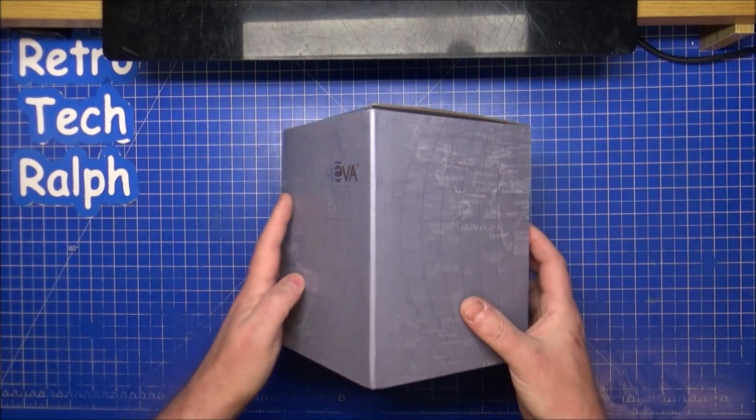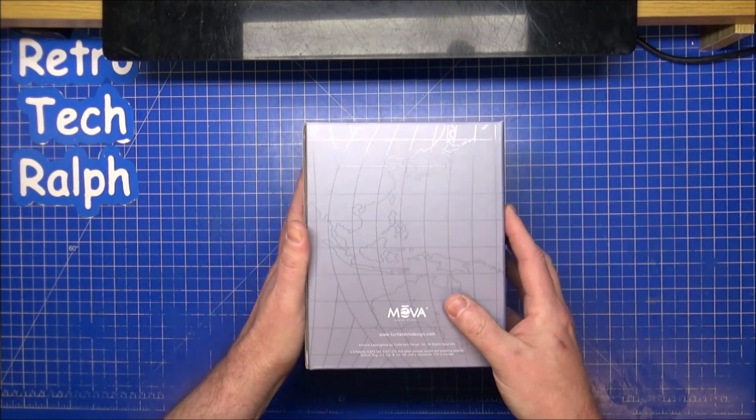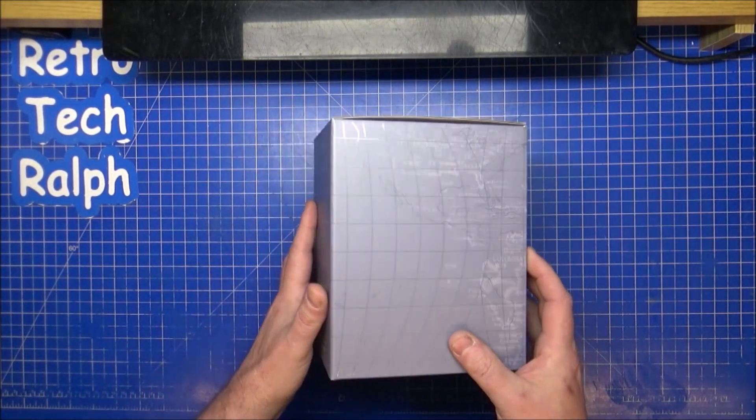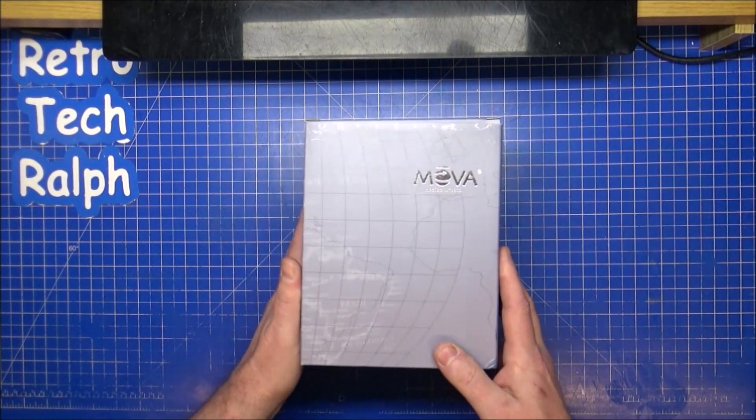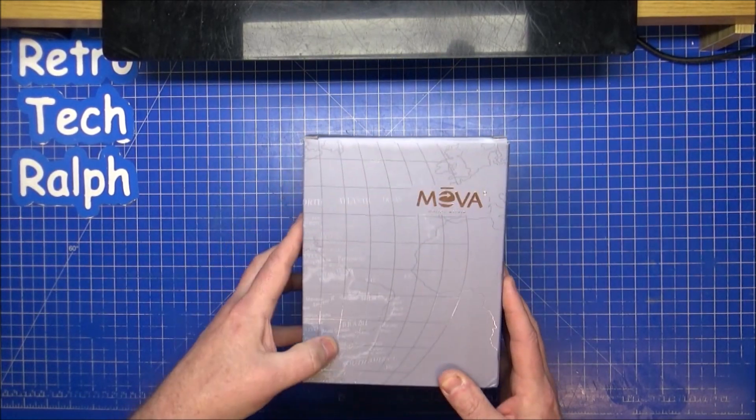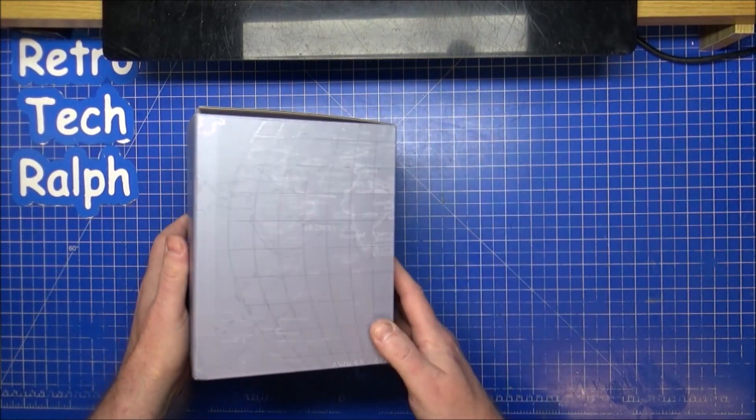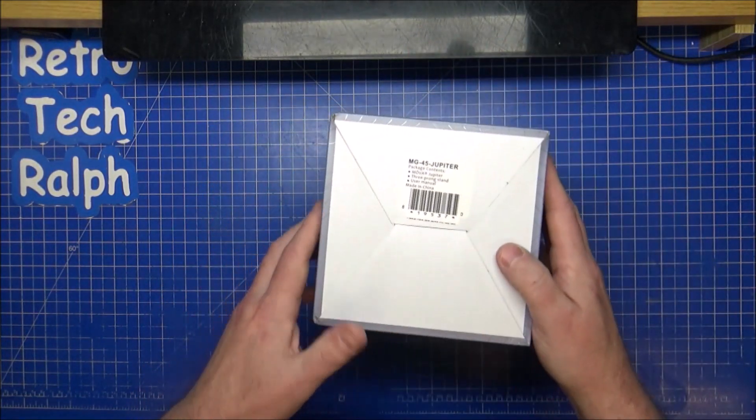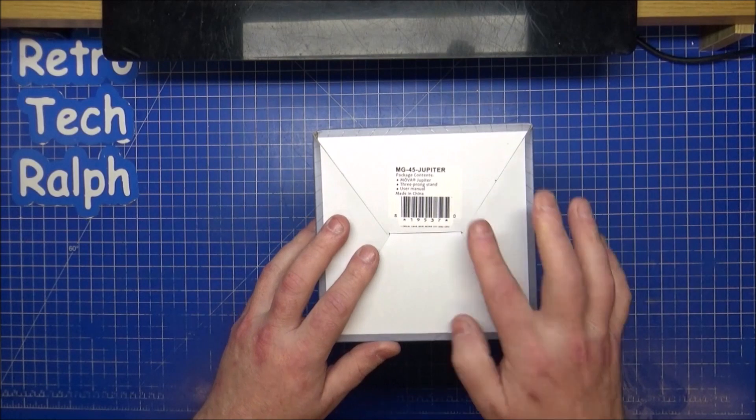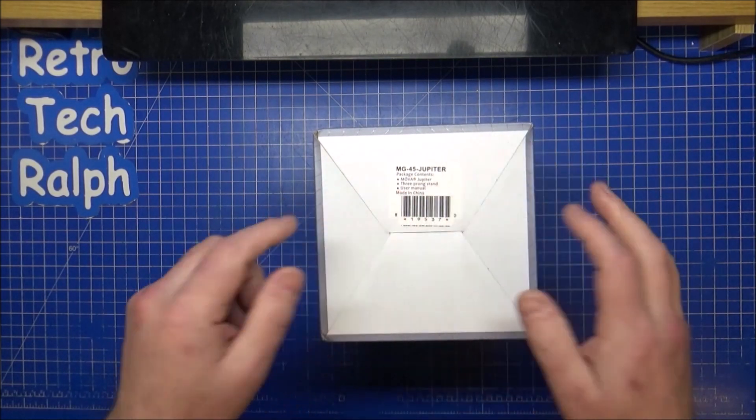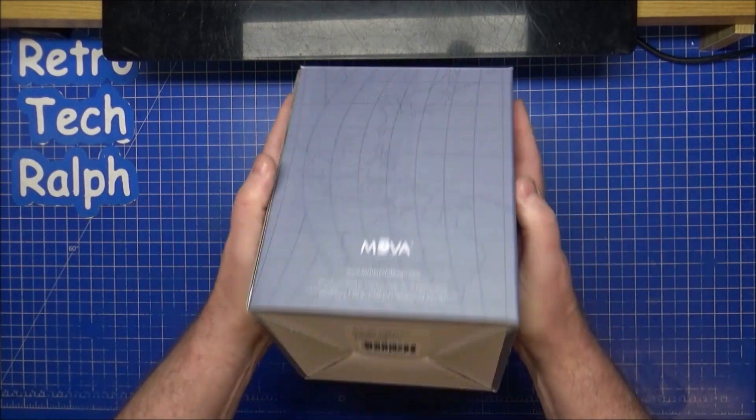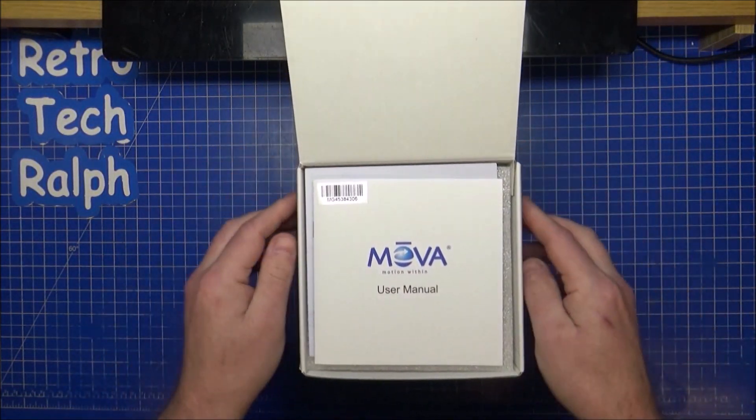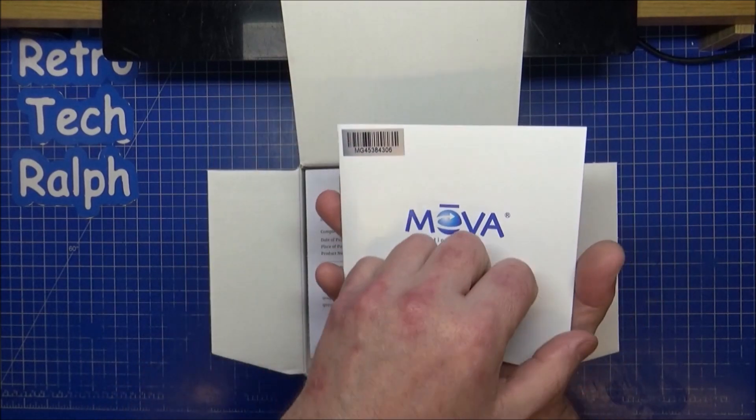I'll show you the outside of the box. There's a nice little map of the globe. The bottom shows you MG 45 Jupiter—contains Jupiter globe, three prong stand, and user manual made in China. So let's get this open.